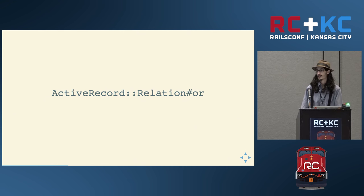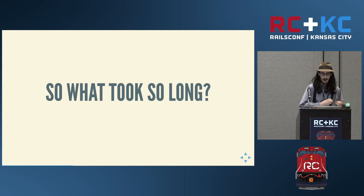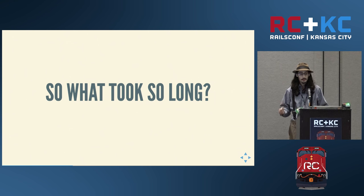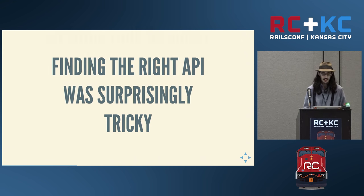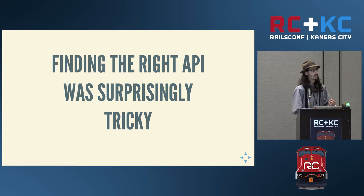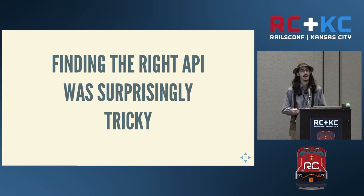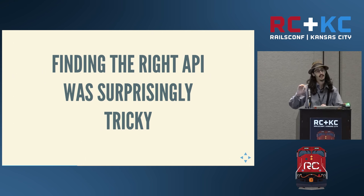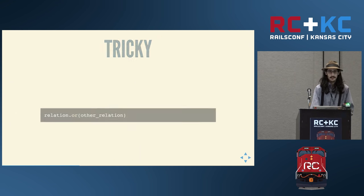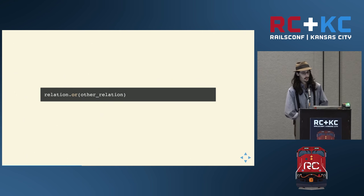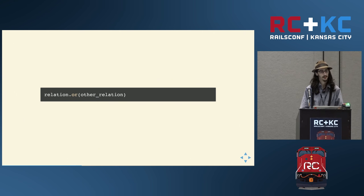With a response like that to this feature, that begs the question: what took so long? Why didn't we just do this in the first place? There are a number of reasons, but the biggest one is that the API is actually much less obvious than you might imagine. One thing that people often forget when dealing with open source projects is that it's extremely difficult to change or remove an API after it's been introduced. We can't just do something that's good enough unless we're really confident it won't get in the way later. This is the API we shipped — it's a method on relation and it takes another relation as the argument.